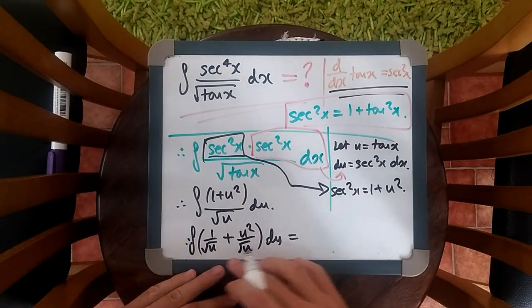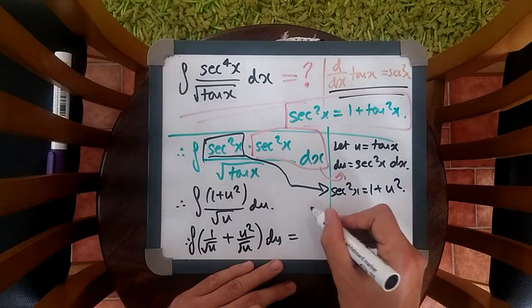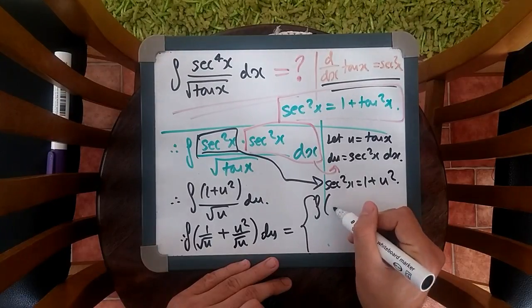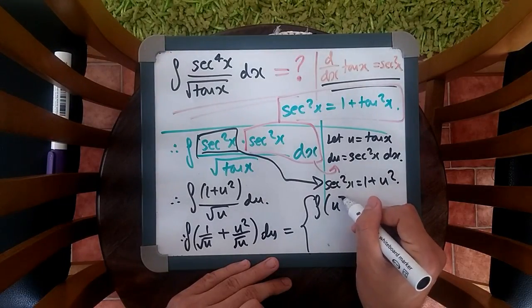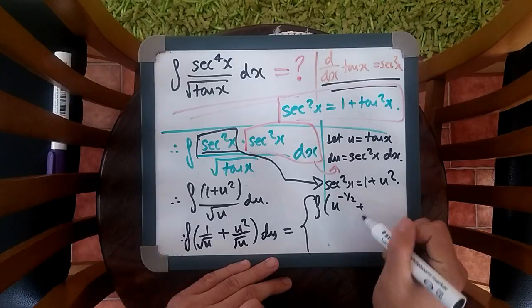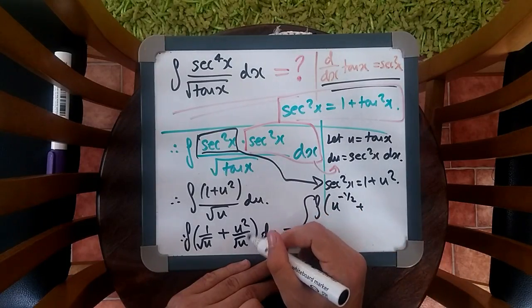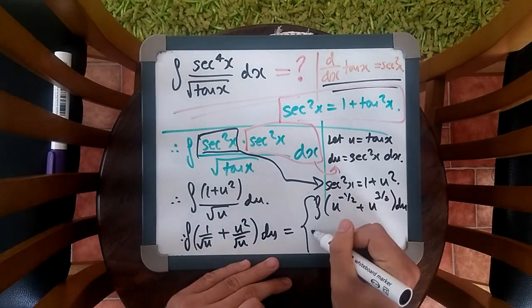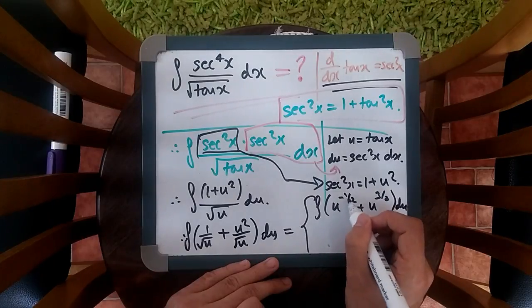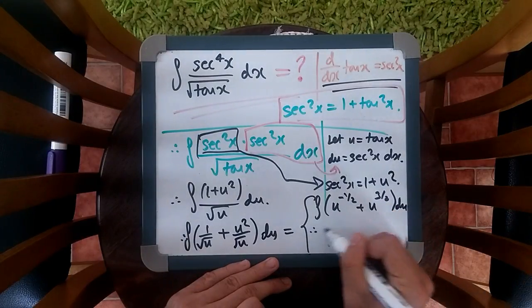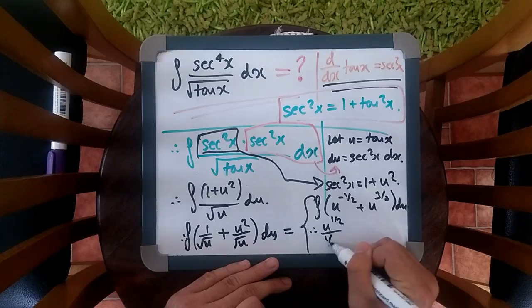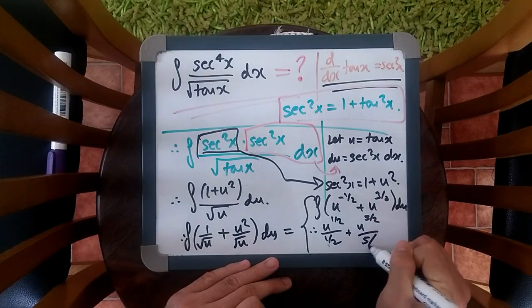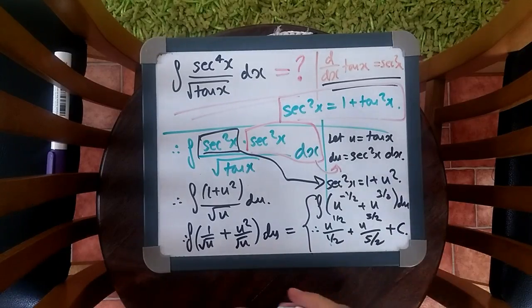And if we remember, one over root u is just u to negative one half. This is going to be the integral of u to the power minus half plus u squared over root u, so u to the power of three over two du. And finally, the power rule. All you do is raise the power by one and divide it. So you're going to get u to the power of half over half plus u to the power five over two over five over two plus c.